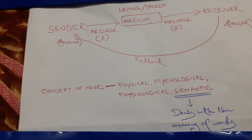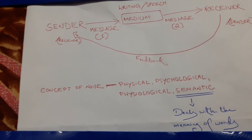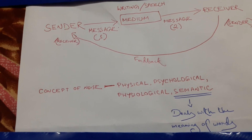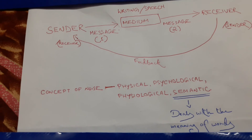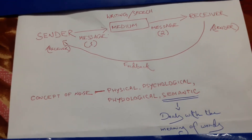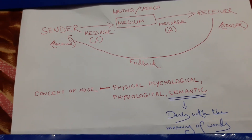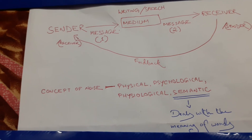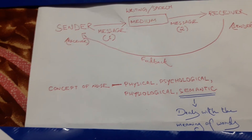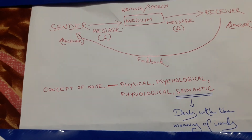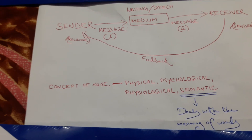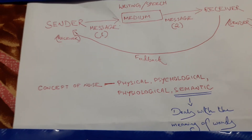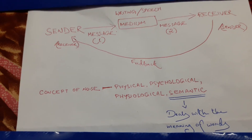Psychological noise, on the other hand, occurs when the transmission of message is affected by predetermined biased notions which might influence the receiver into misinterpreting your message. Physiological noise is pretty much self-explanatory — it deals with health issues that may affect the interpretation of your message.